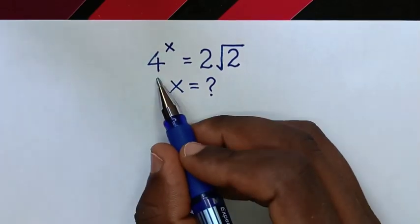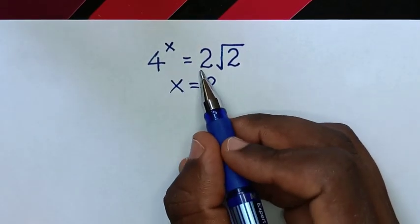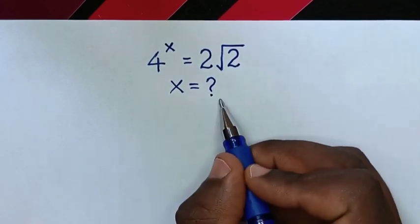Hello. How to solve 4 to the power of x equals 2 square root of 2 to find the value of x.